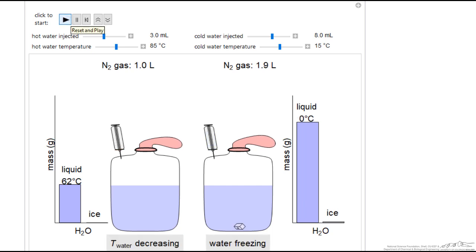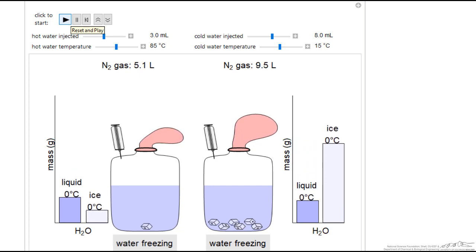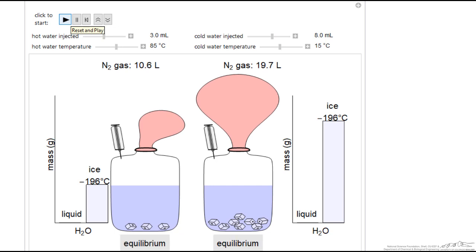We see that the amount of liquid is decreasing on the right sooner just because the water was colder when we injected it. And we slowly see that we cool down to minus 196 degrees C, the equilibrium temperature at one bar pressure for nitrogen. And then the balloons fill up with the nitrogen that vaporizes.